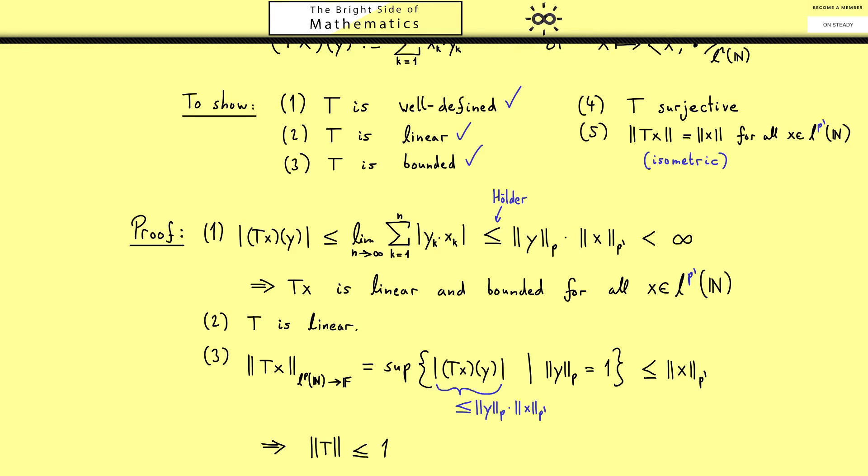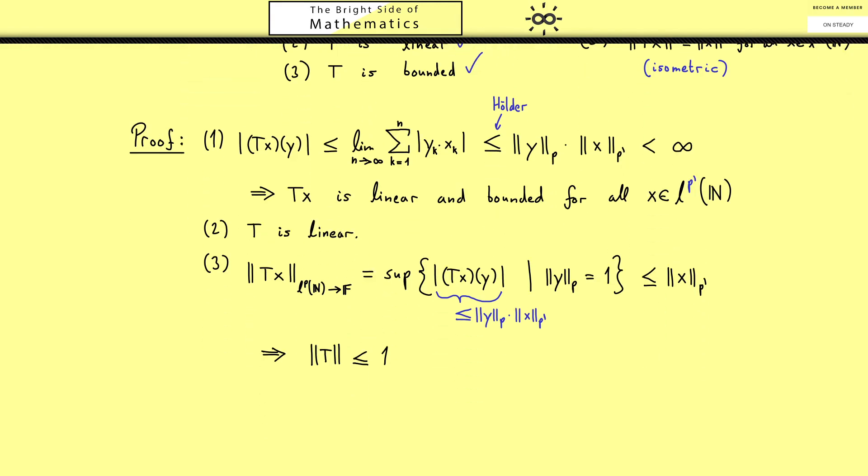Then let's go to the actual hard part showing that T is surjective. As a reminder I've put the operator T here in the box and now surjectivity means we hit all the linear functionals here on right hand side. Therefore let's take an arbitrary one and call it y prime. And now I want to use the linearity and conclude that I know what y prime is when I know what it does with the unit vectors ek.